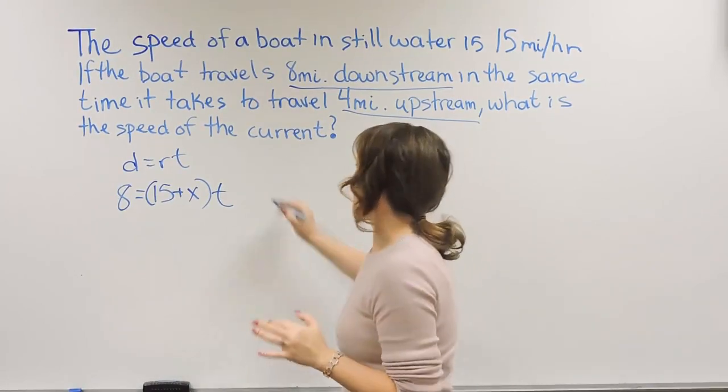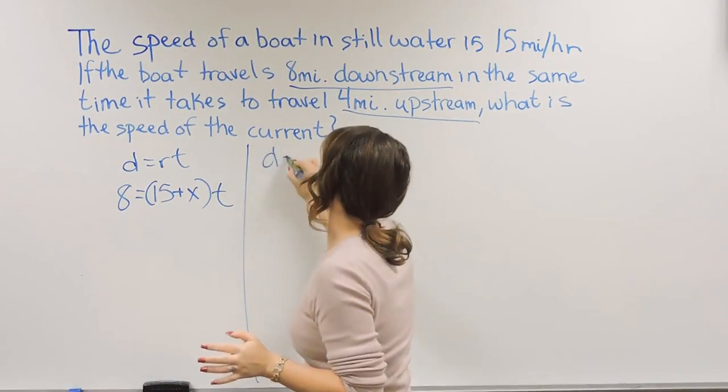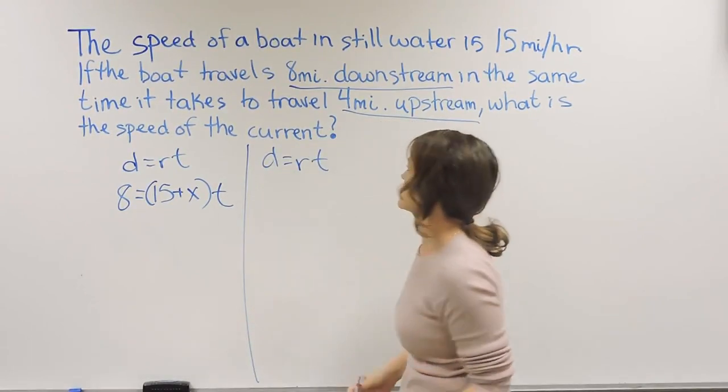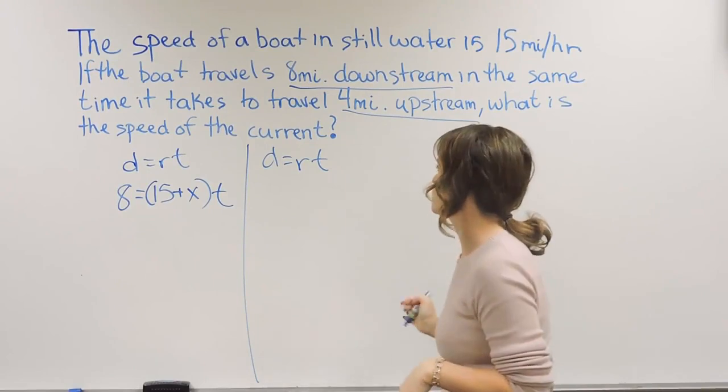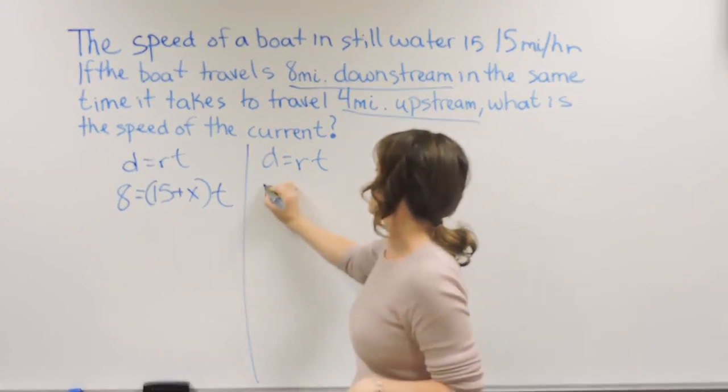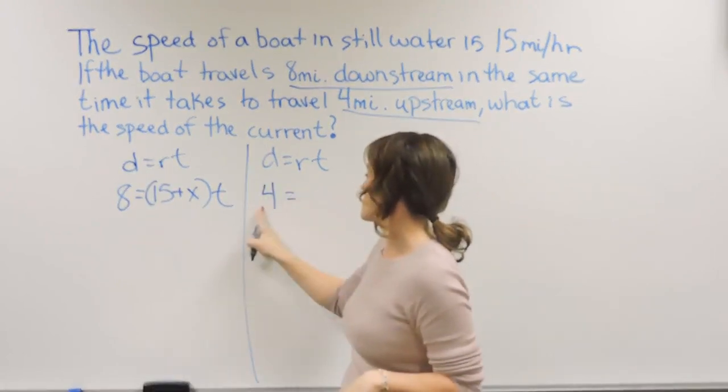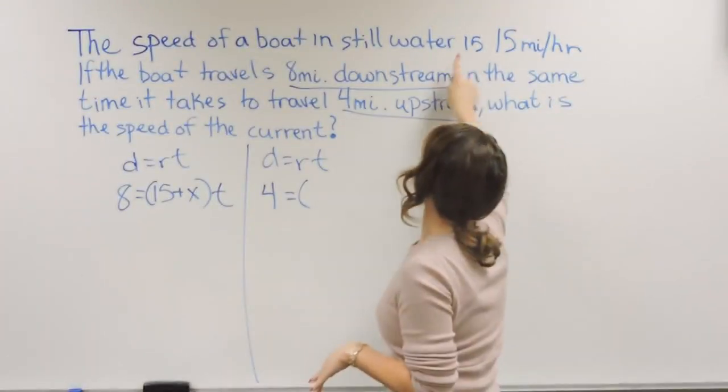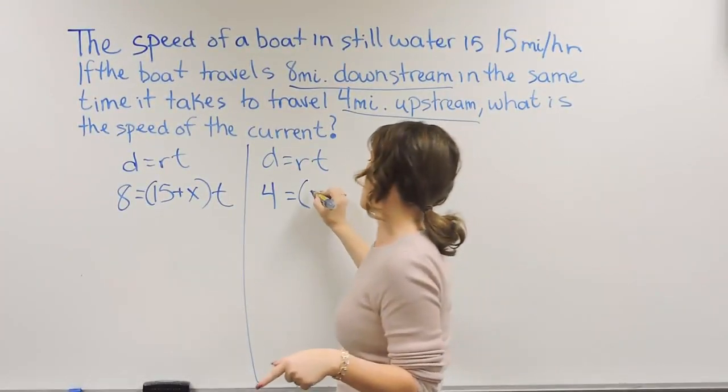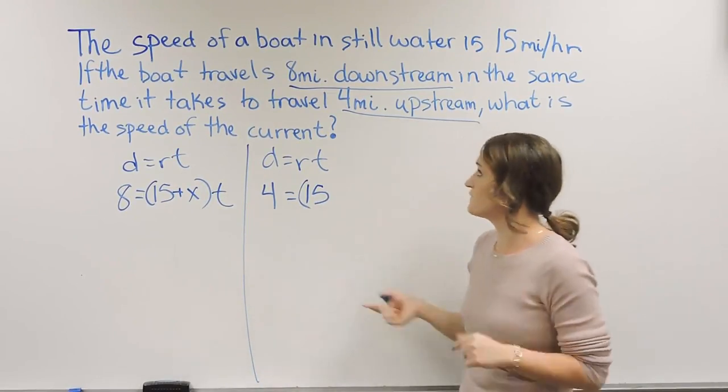And we're going to do the exact same thing here, but we're going to do it for when we're going upstream. So let's plug and chug into that as well. So for going upstream, it says 4 miles. So I'm going to plug in a 4 for D. And the rate here is still 15 miles an hour. So for the rate, I'm going to plug in 15.